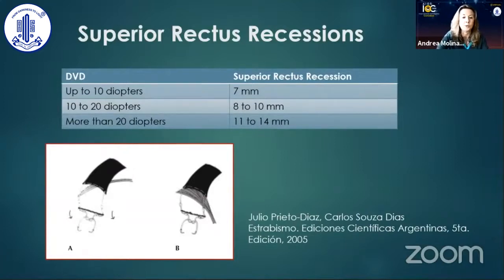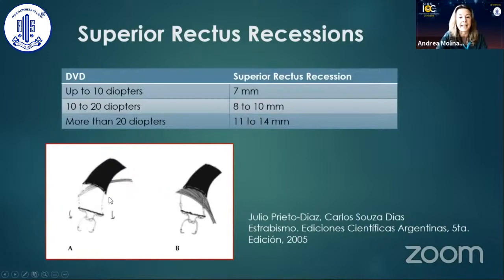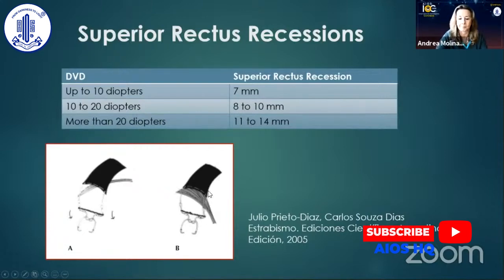What I do — because I don't like hangback sutures in very large superior rectus recessions — is I place a fixed suture on the temporal border of the superior rectus, and then a semi-hangback suture on the nasal border. I place it not on the insertion but a little bit further back, and I let it hang back.